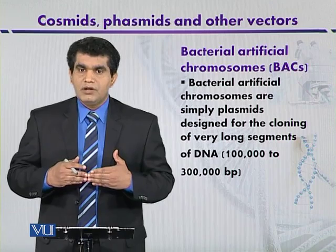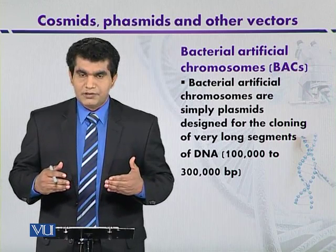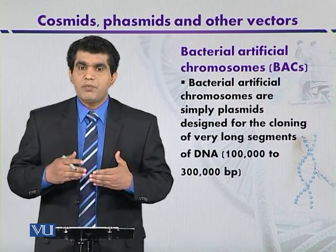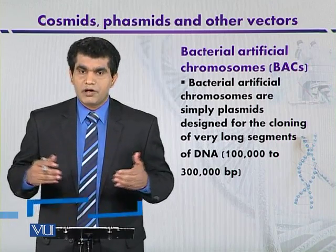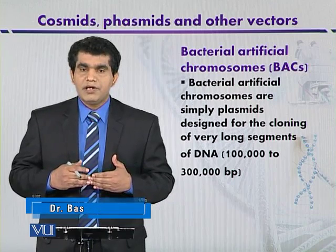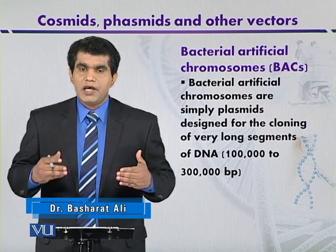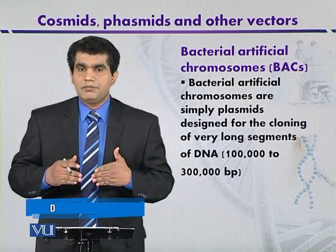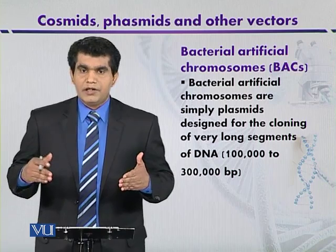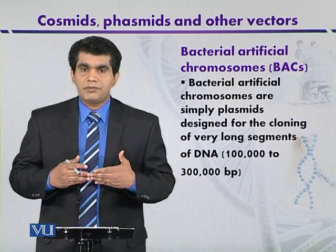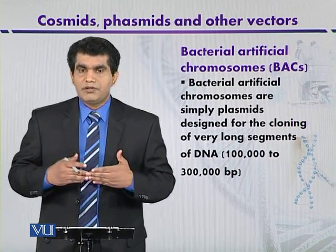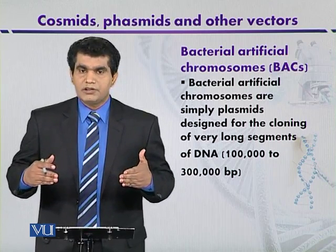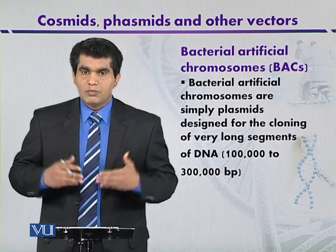BACs have been constructed from some natural plasmids. If you remember the F plasmids, that are important during the process of conjugation, and even its derivative which is called F prime, that can carry the segment of a bacterial chromosome. This trait of the F plasmid has been used to construct bacterial artificial chromosomes.